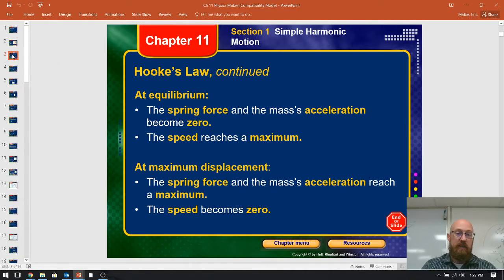So the big idea is on that diagram that we're just looking at, at equilibrium, or the center, or the neutral point, the spring force and the mass's acceleration are zero. There's nothing speeding it up, nothing slowing it down without friction. This is where velocity reaches the maximum point. Now, at the ends, when it's finally come to a stop, the speed becomes zero, but that means the spring force and the acceleration are going to snap it back to the center point, and that's where the acceleration is its maximum. Hopefully that makes sense.